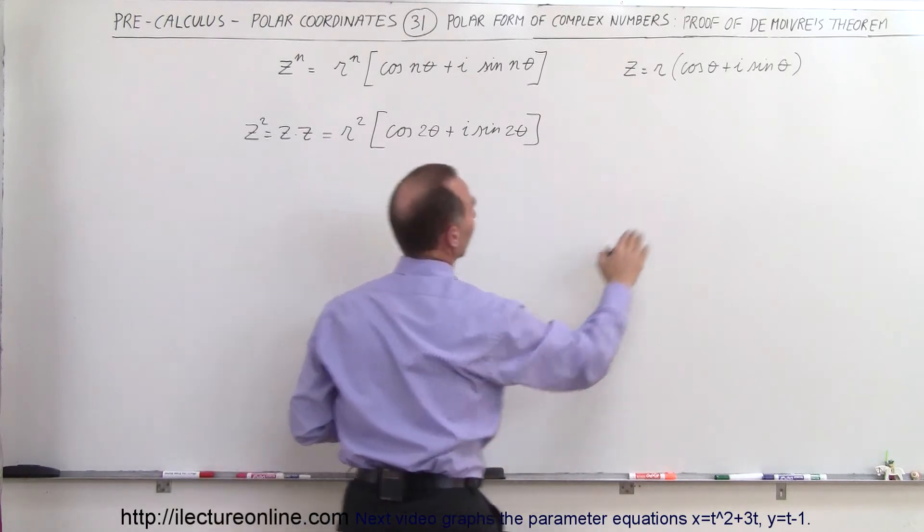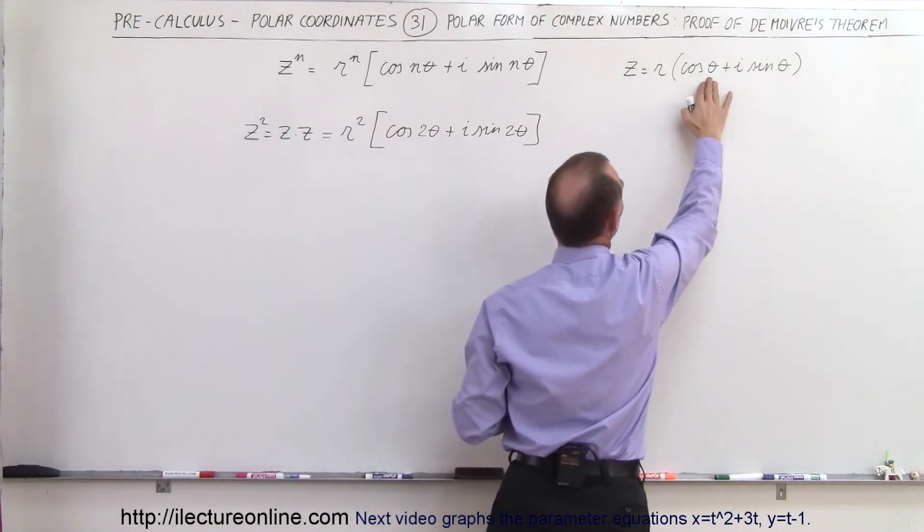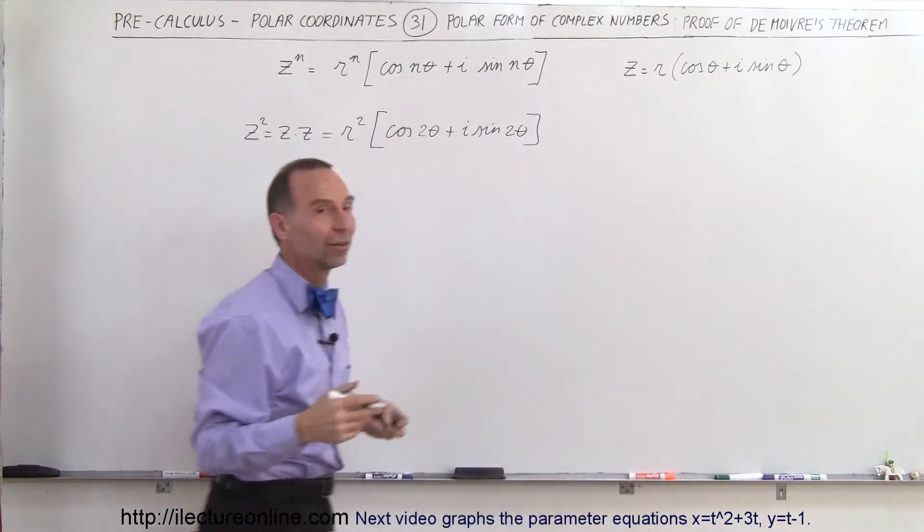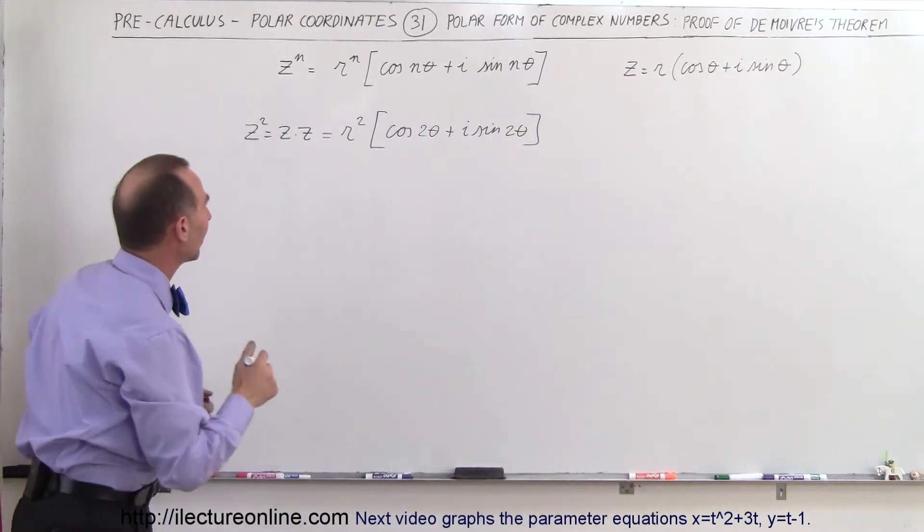We're multiplying two of these together, so we add the two angles together. That's why we have 2 theta. So what happens when we take z squared and multiply it times z?